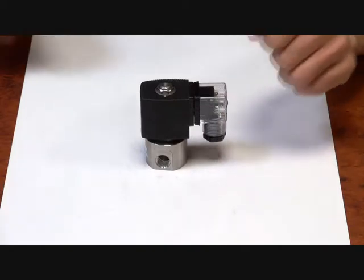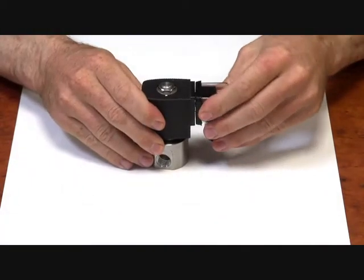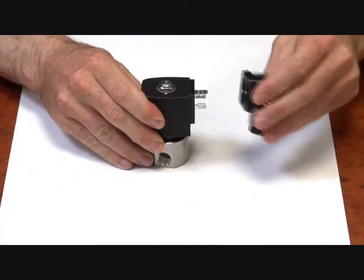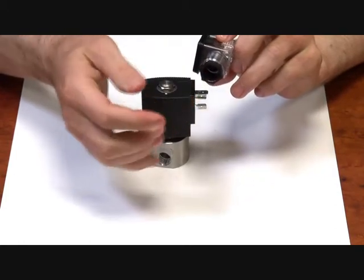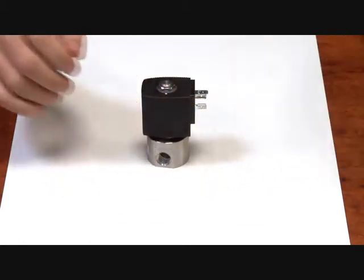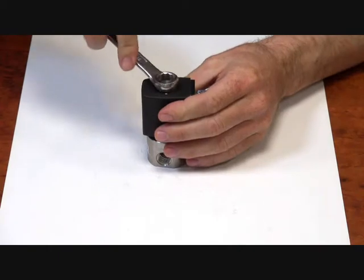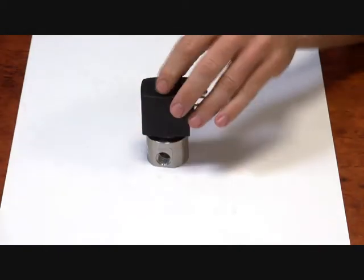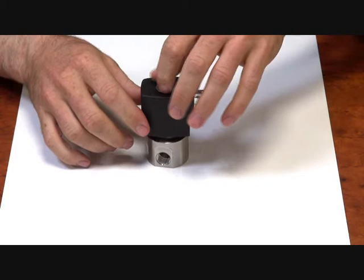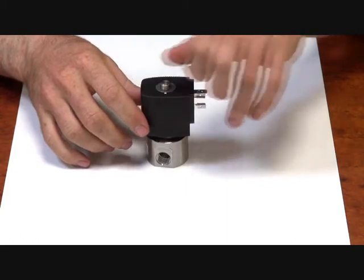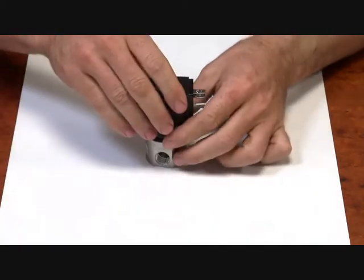Now I'll take it apart just to show you how it works. Obviously the din plug can just pull off the coil. When you wire it up you need the appropriate cable gland into there. Just take this top nut off. That allows the coil to pull off.